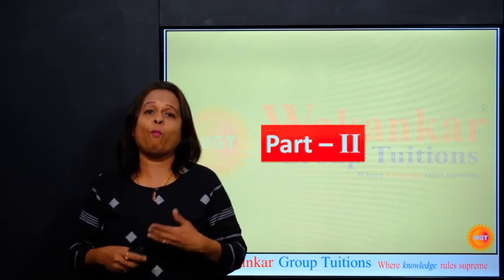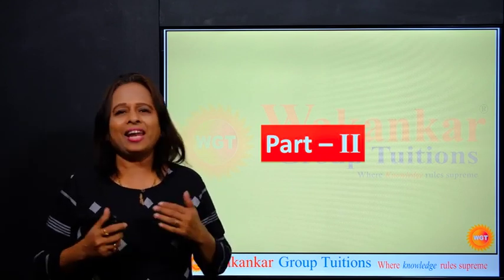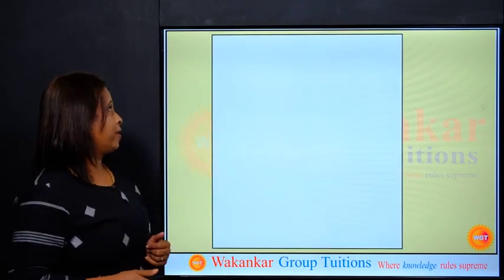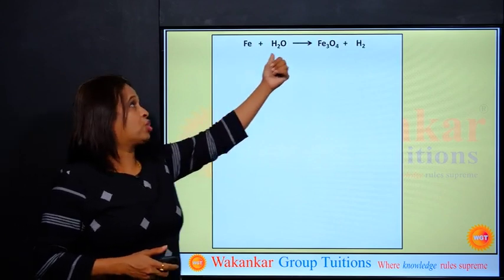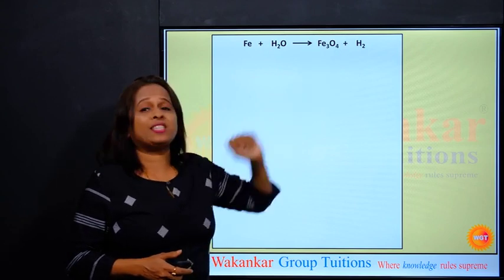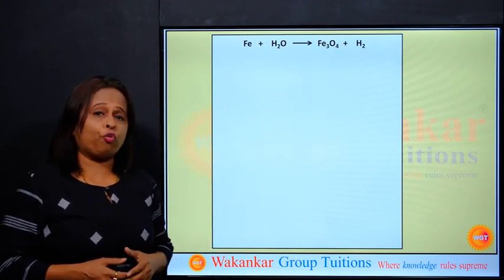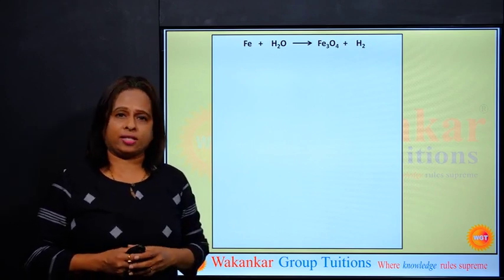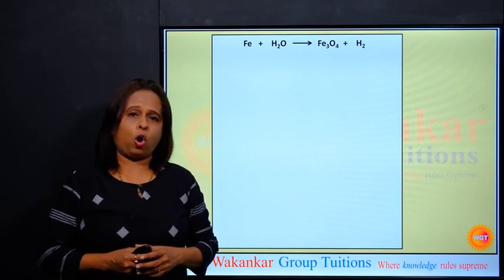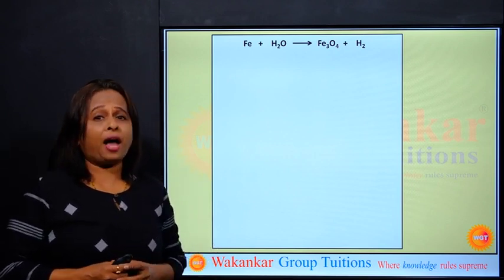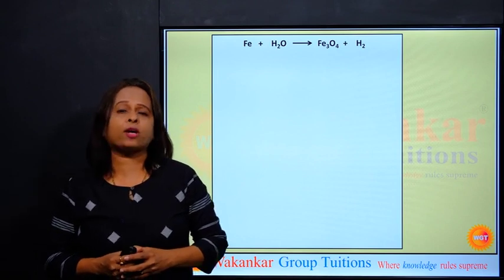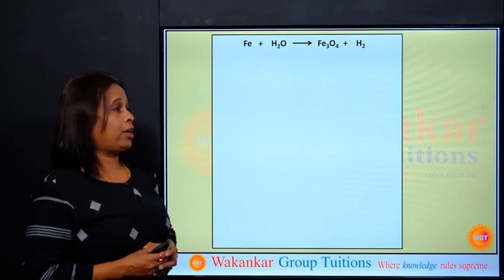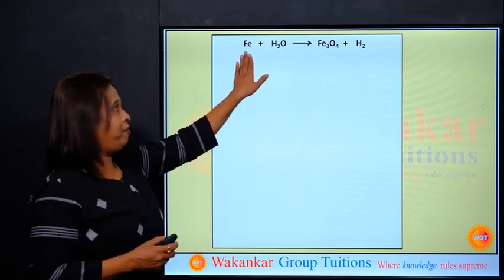Let us see a few more chemical equations in part 2. First one: Fe + H2O gives Fe3O4 + H2. Fe3O4 is also called ferrosoferric oxide or tri-iron tetroxide. Okay, let's check the number of atoms of metals first.